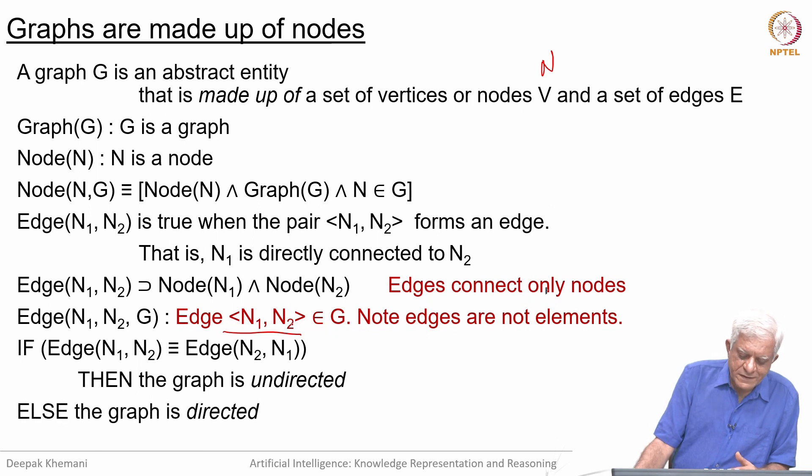If the edge relation is symmetric, then we say that the graph is undirected, which means you can go from N1 to N2 and you can also go from N2 to N1. Otherwise it is directed. When we say edge N1, N2 we have a sense of direction from N1 to N2.